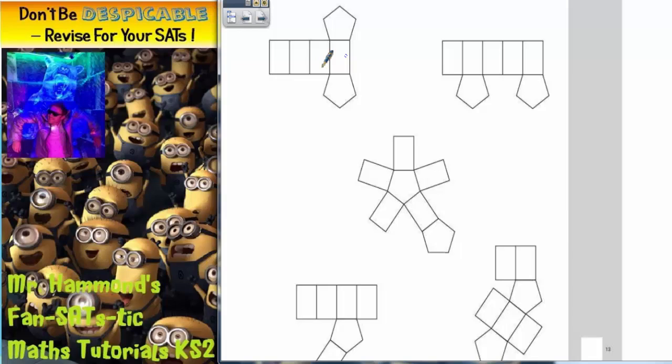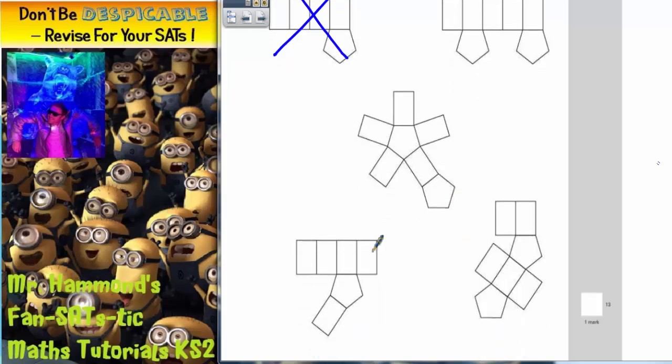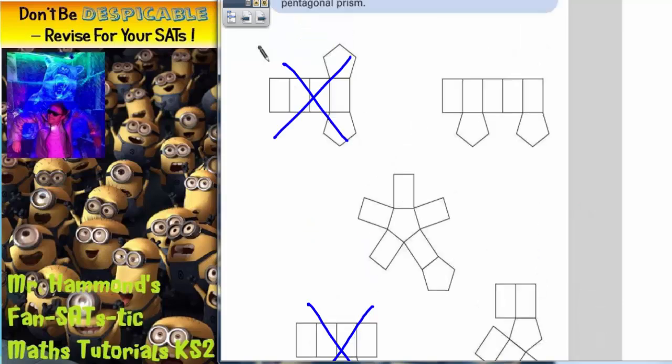Well this one here has only got four rectangles. So straight away that one can get ruled out. This has got five rectangles and two pentagons. Five rectangles and two pentagons. Five rectangles and one pentagon. So we've already managed to rule out two of them.